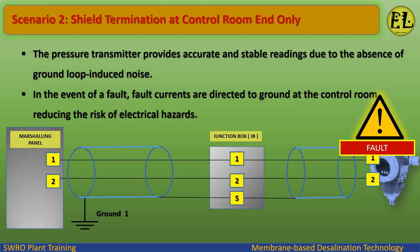In the event of a fault, fault currents are directed to ground at the control room, reducing the risk of electrical hazards.